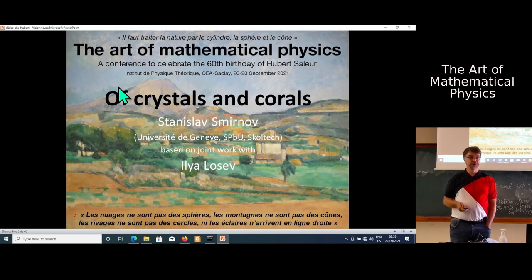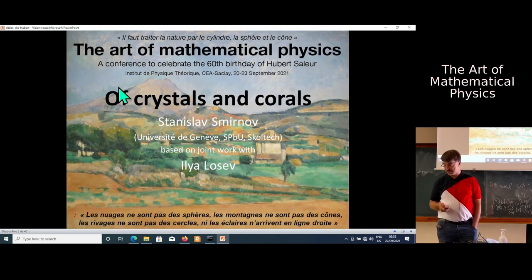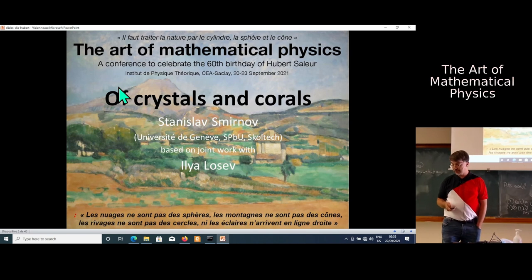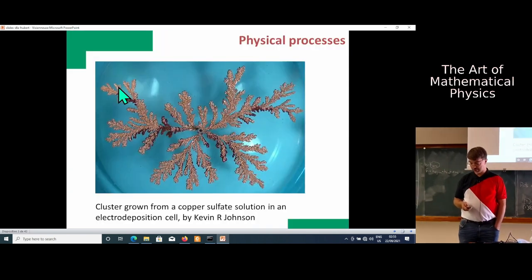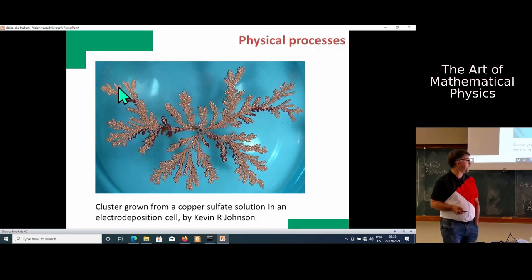What I will speak about is a model called diffusion limited aggregation, where thousands of papers have been written. It's interesting that mathematically there is essentially one theorem there, and despite thousands of papers physically, there is some contradiction in how we understand it.